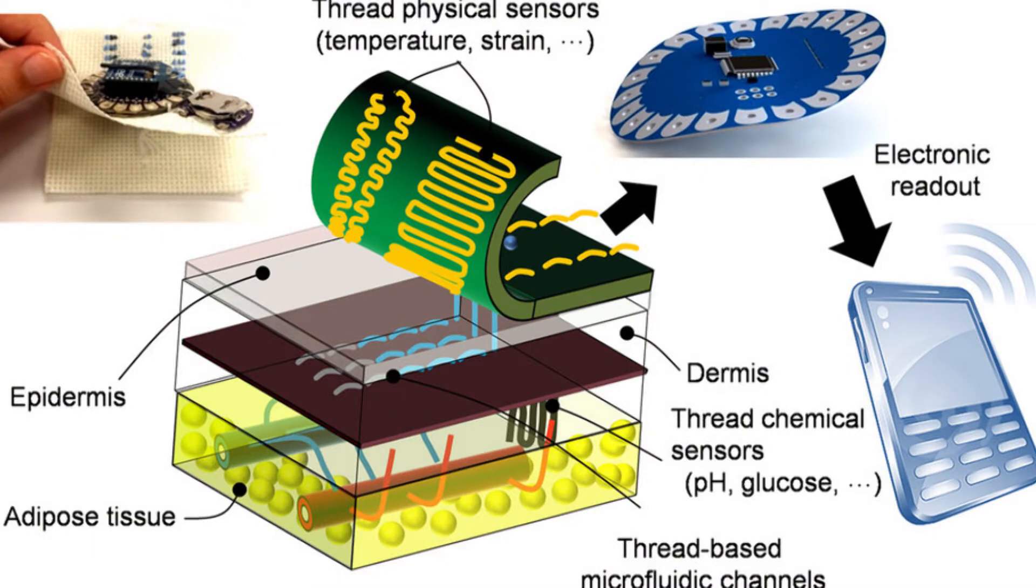Because when you have a wound, the tissue strain, which is the stretchability of the tissue, changes. So if you can monitor how the tissue can stretch with the help of a strain sensor, which is what we basically made using these threads, you can monitor whether the wound is healing.